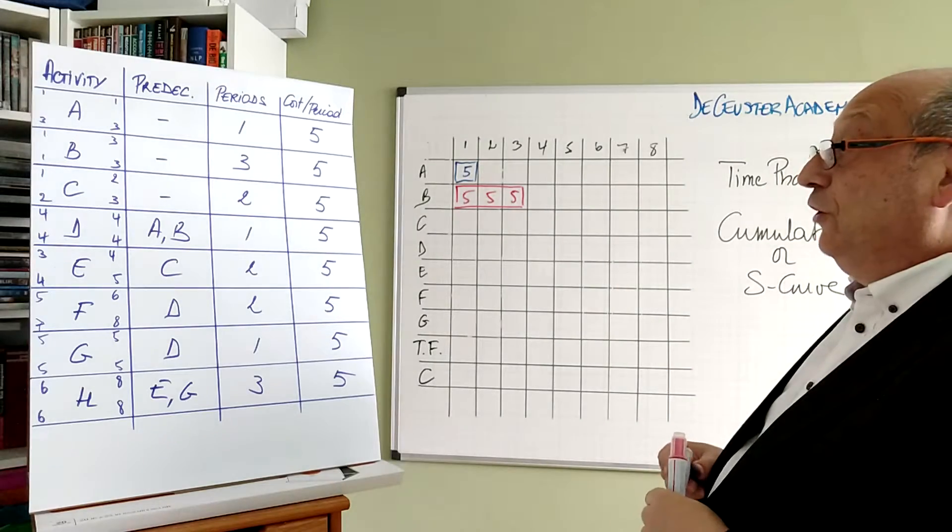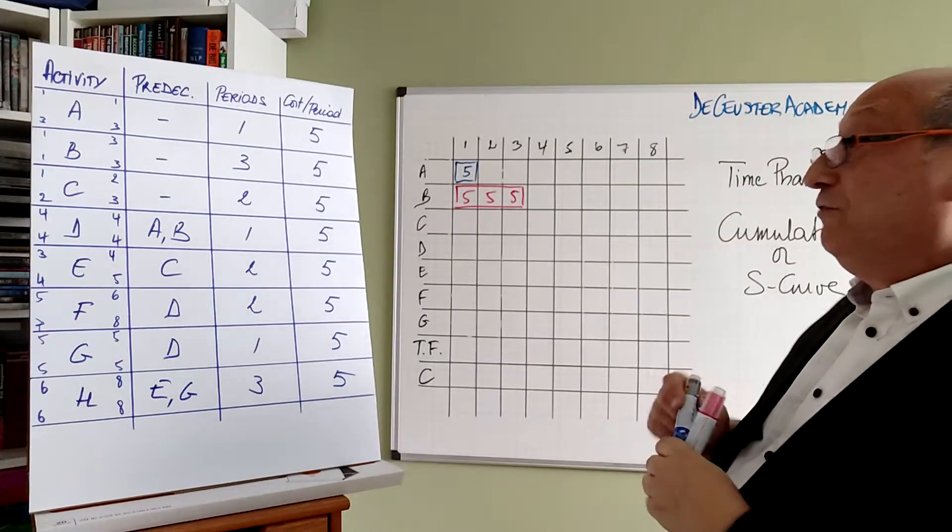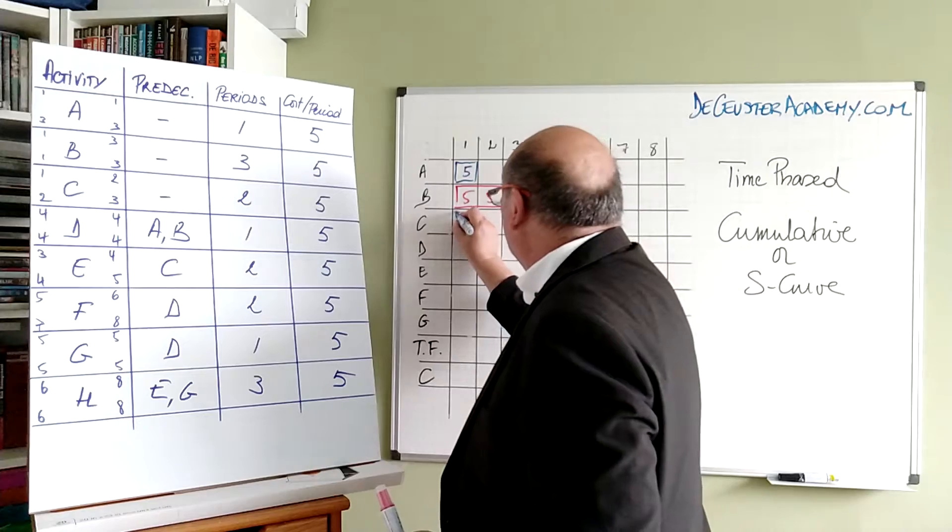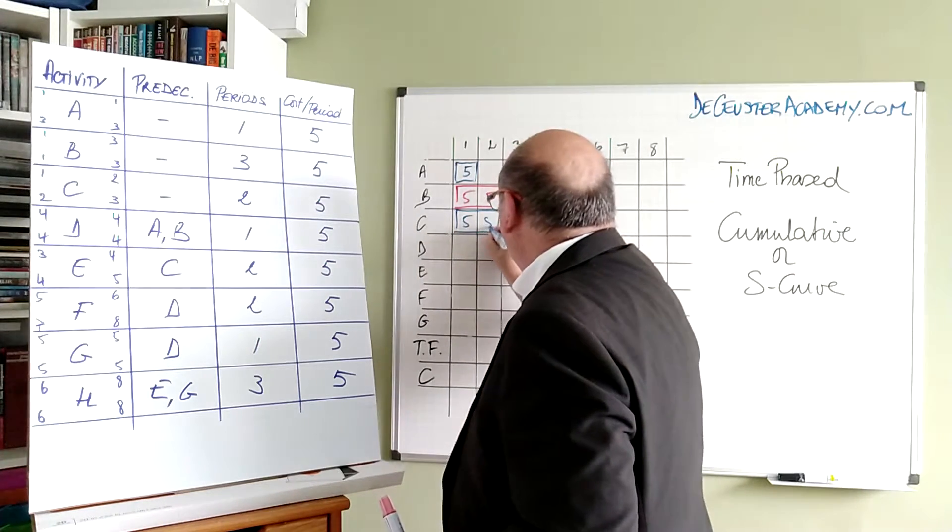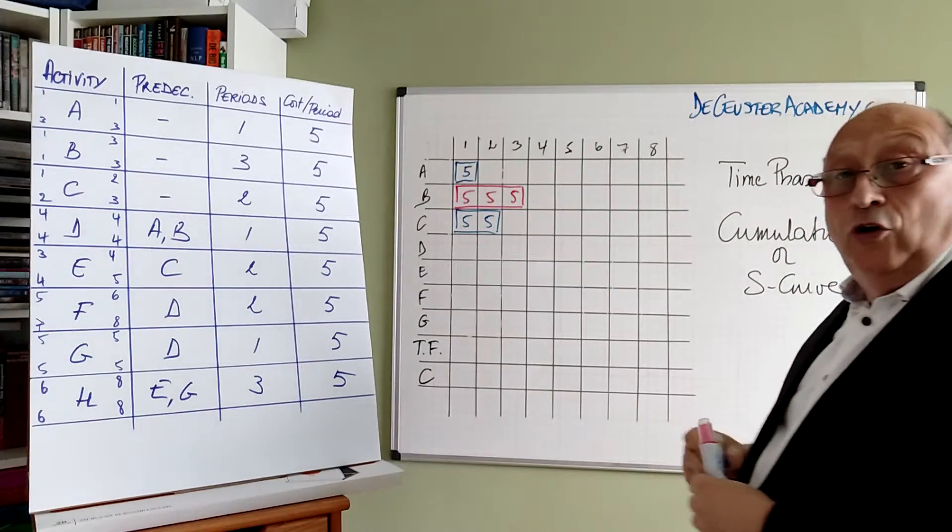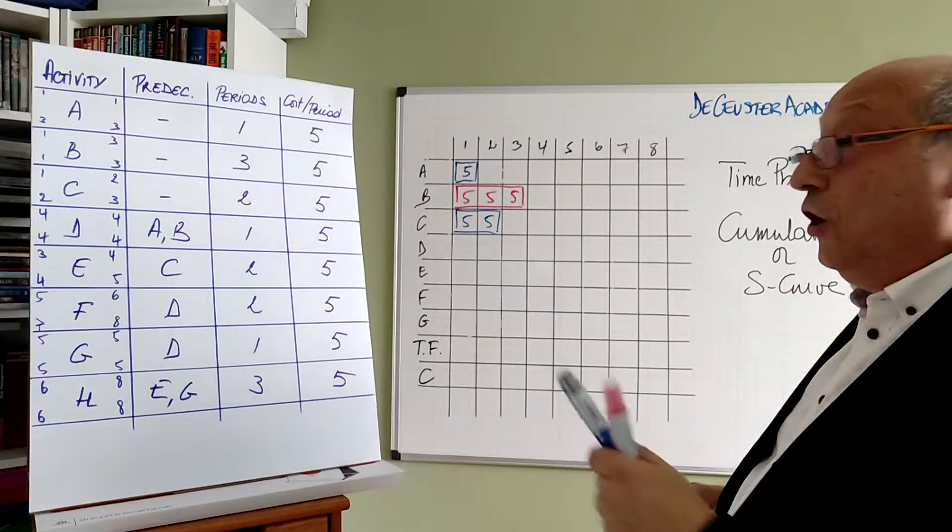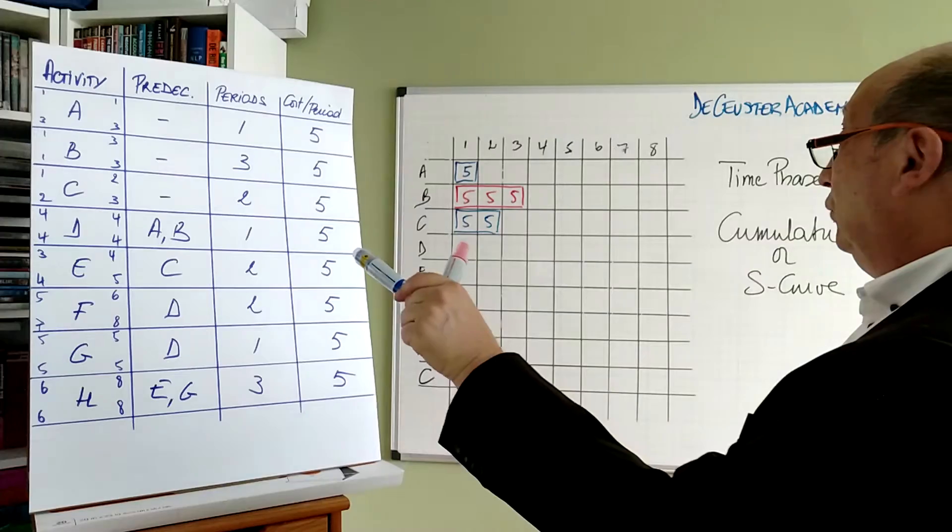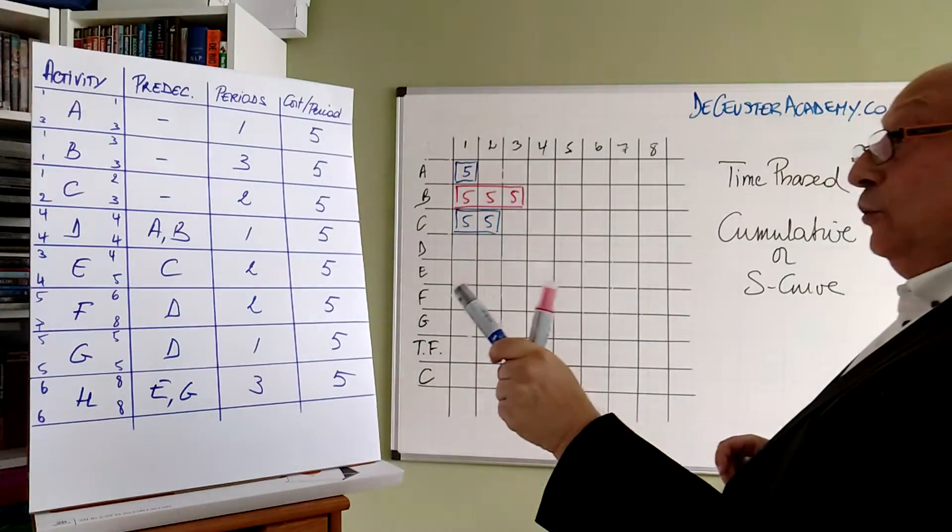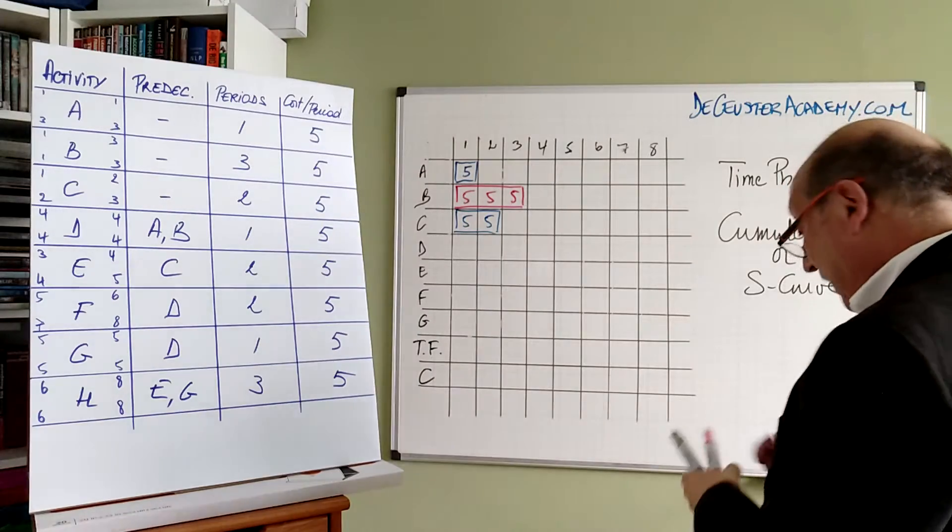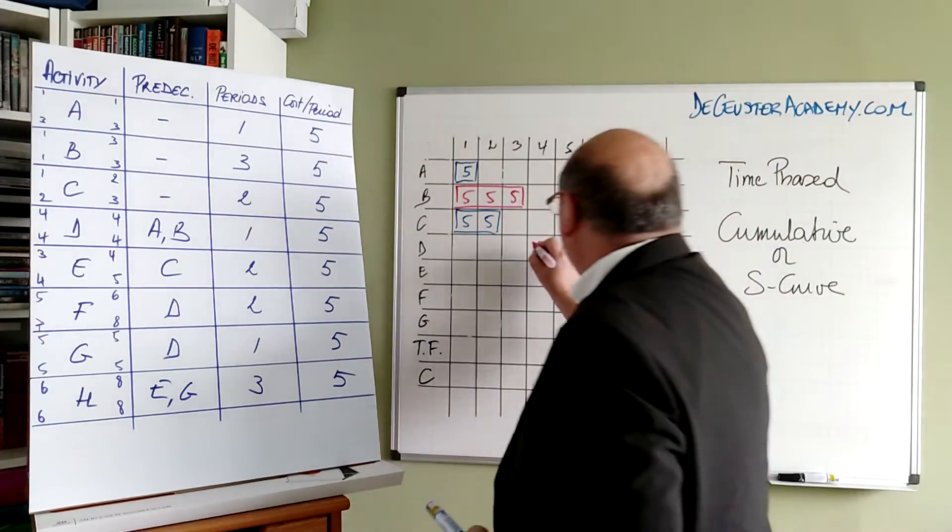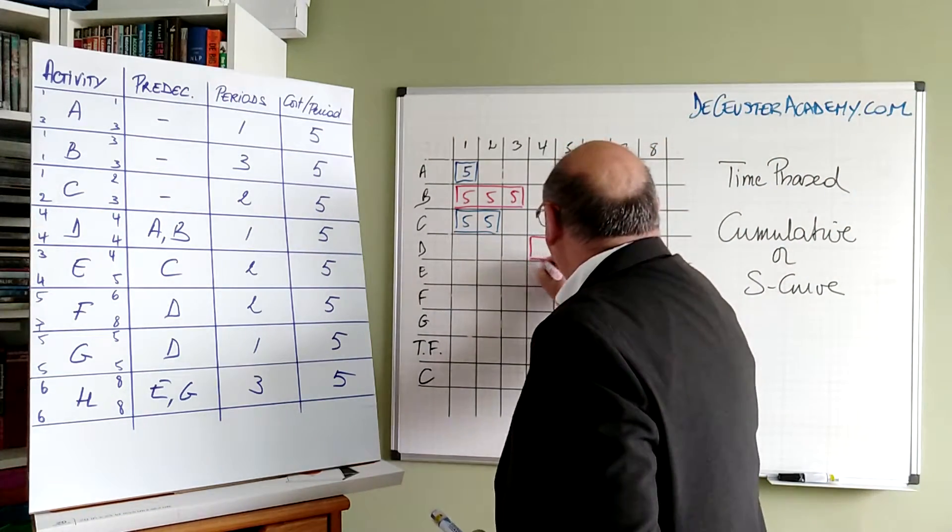C has a duration of 2 periods, going from 1 to 2 in the early start. So we have C here, 5 and 5. Now we continue to activity D, which has a duration of 1 but is on the critical path. So I have to put it in red. It's here, 5.